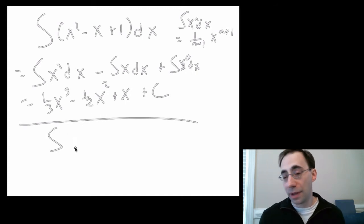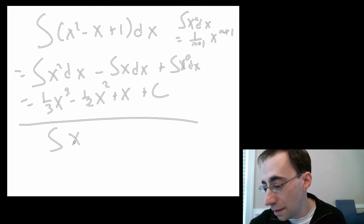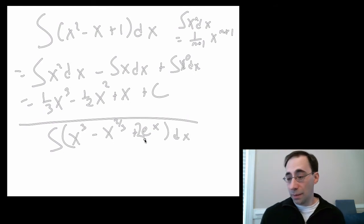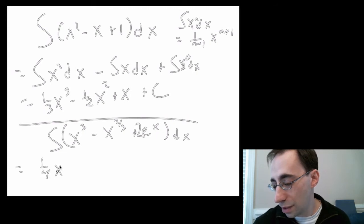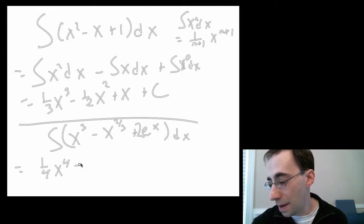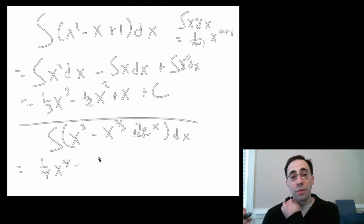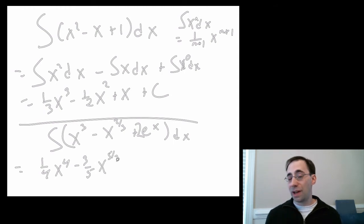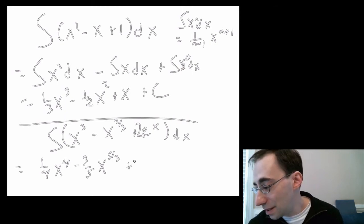So we did that polynomial. We can do any polynomial. For instance, we can also do any more complicated function that's some sum or difference of simpler functions. So x cubed minus x to the 2 thirds plus 2 e to the x. That's going to equal 1 quarter x to the 4th from the first term minus, now 2 thirds plus 1 is 5 thirds, 1 over 5 thirds is 3 fifths. So this is minus 3 fifths x to the 5 thirds. I'm going pretty fast here. Part of the benefit of having this on tape is you can pause it. If you're not sure about a piece, stop it, do it out by hand, make sure you get it, and then start the video again. Plus 2 e to the x.